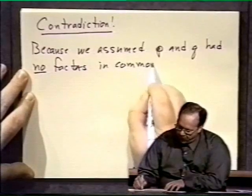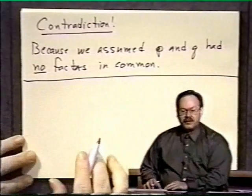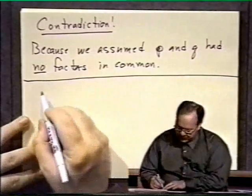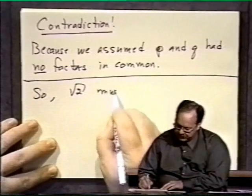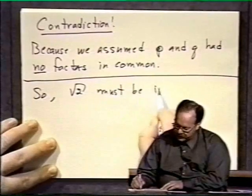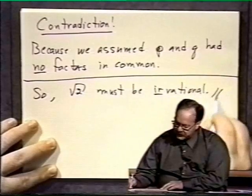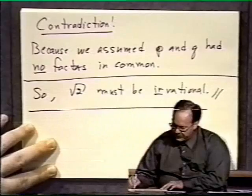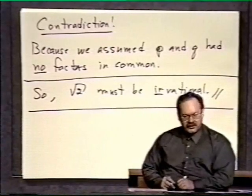This all derived from the fact that we assumed that square root of 2 was rational. So square root of 2 must be irrational. It cannot be rational because if it's rational, it leads to that contradiction. That's the proof that square root of 2 is irrational. That's all there is to it.